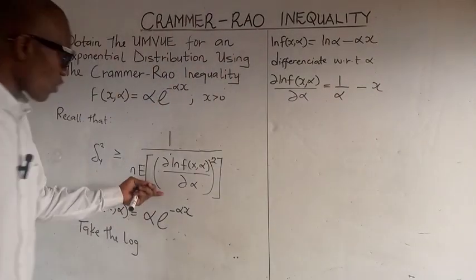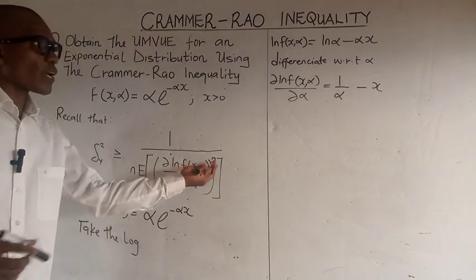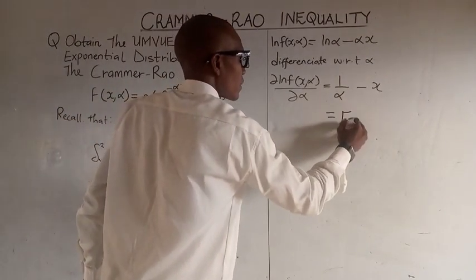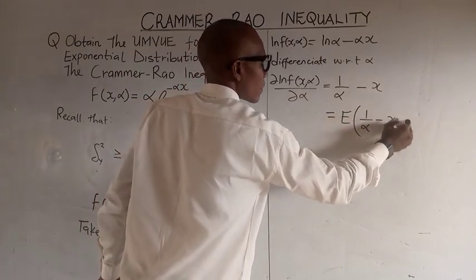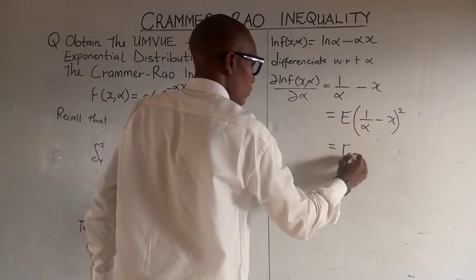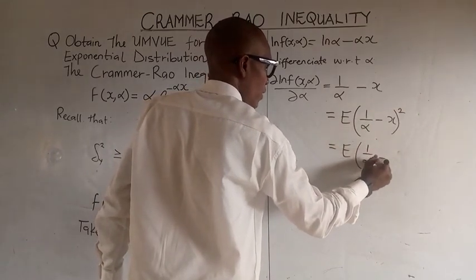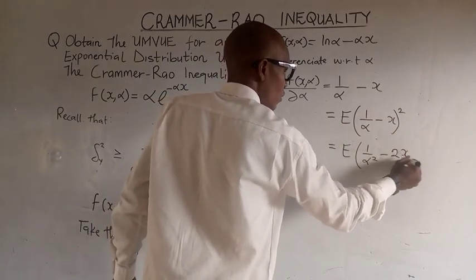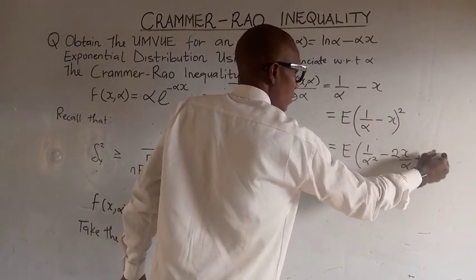All we need to do is substitute into the Cramér-Rao inequality. What we do is we take the square first and the expectation. If you take the square here, we have 1 over alpha squared minus 2x over alpha plus x squared.